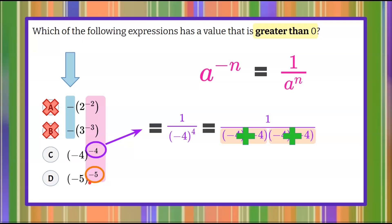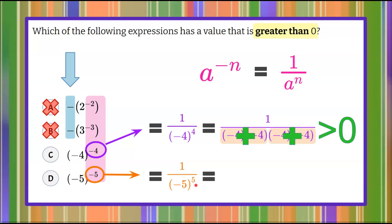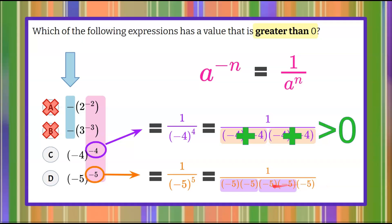Let's look at D and see why it might not be true. I'm going to rewrite this power to be 1 over negative 5 to the positive 5, which is 1 over 5 negative 5s multiplied by each other. When I consider a pair, this would be positive, this would be positive, but I have an odd man out — meaning 1 over 5 multiplied by itself 5 times would be negative, because I have one negative value left. So that means positive, positive, negative, giving me a negative value, which makes this fraction less than 0.